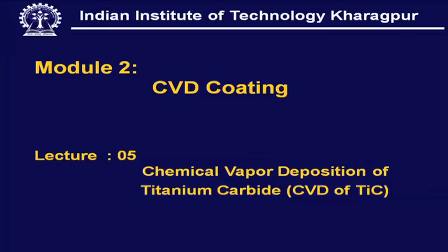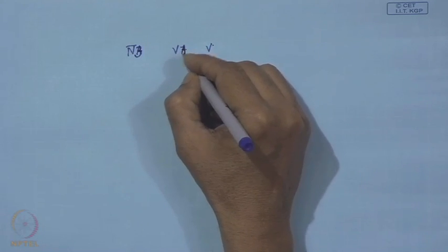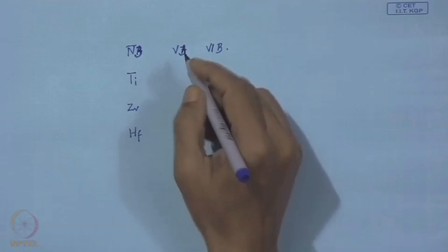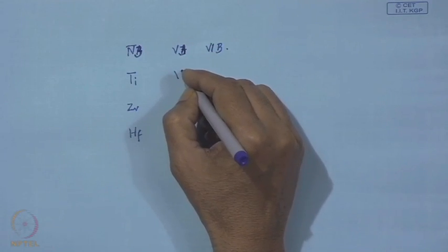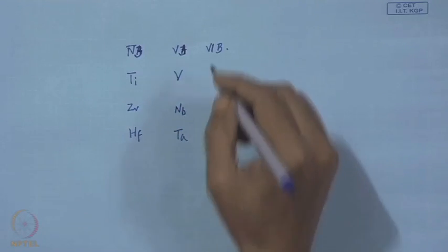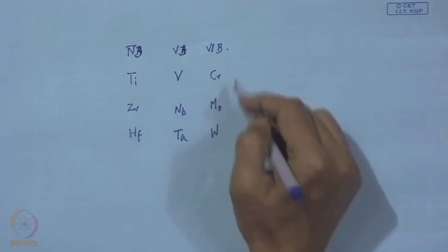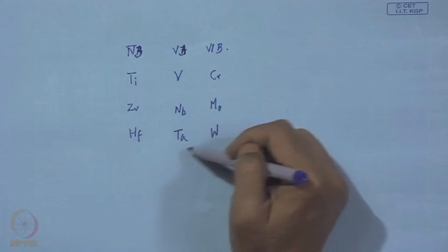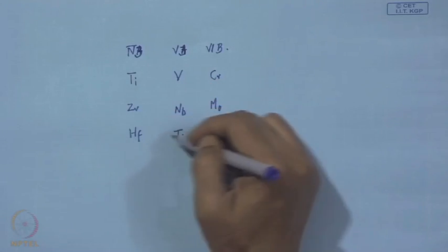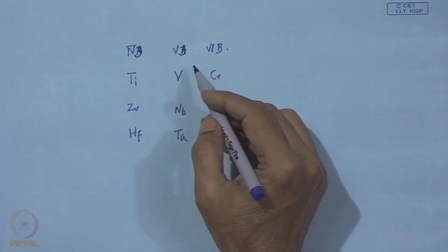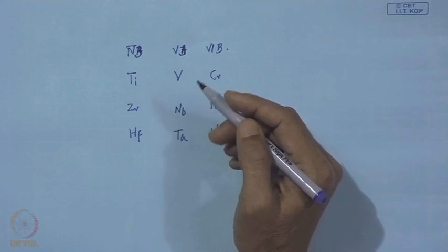Let us look into this portion of the periodic table — the transitional elements of group 4a, 5a, 4b, 5b and 6b. Here we have titanium, zirconium and hafnium; in group 5b, vanadium, niobium and tantalum; in group 6b, chromium, molybdenum and tungsten. This 3×3 matrix constitutes the most strategic elements which are formed as carbide, nitride, boride or oxide, and they are becoming more and more important to fabricate high performance cutting tools.